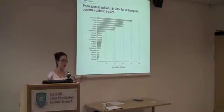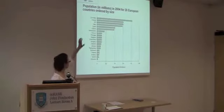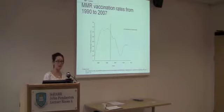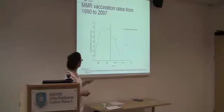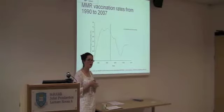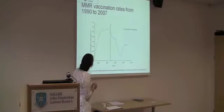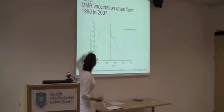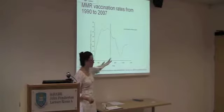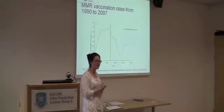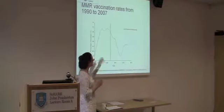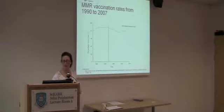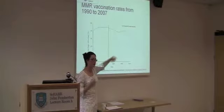Rule five: use an inappropriate scale. This shows the MMR vaccination rates from 1990 to 2007. The vertical line is the point at which Andrew Wakefield published his paper in The Lancet. The government had quite a big campaign over 10–20 years to get MMR vaccination rates above the level of herd immunity. Then Wakefield published his case report on 11 or 12 patients, and suddenly it looks like nobody's getting their child vaccinated. It was quite a dramatic fall, and the scale makes it look very dramatic. If you give the whole scale, it doesn't look quite so dramatic — but you can still see it's below the level of herd immunity.